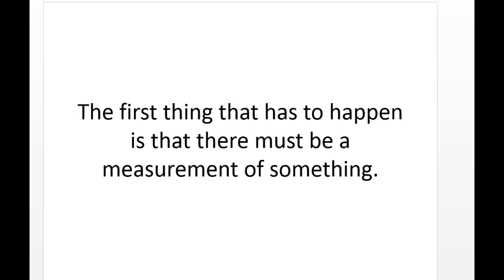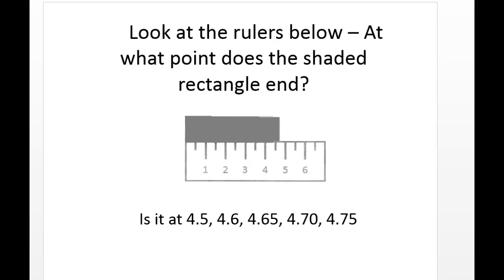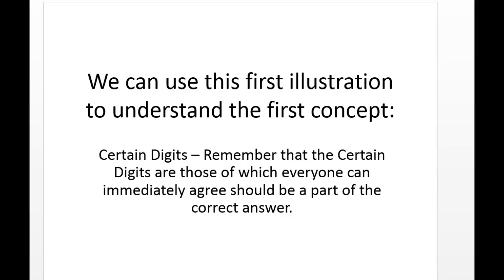The first thing that has to happen is that we have to measure something. Let's look at the ruler below. We're looking at the shaded rectangle that is on top of the ruler. So we look at it - is it 4.5, 4.6, 4.65, 4.7, or 4.75? We can use this first illustration to understand the concept.